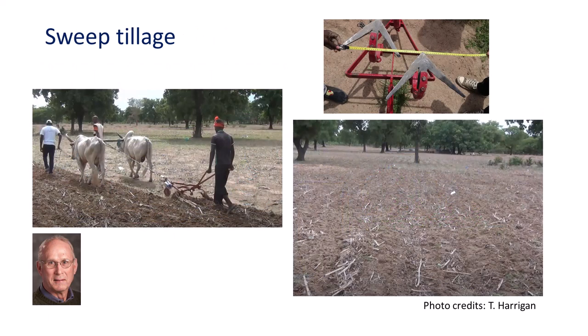Moldboard plowing for seedbed preparation and early weed control is common in Burkina Faso. The problem was that feed was in short supply at the end of the dry season, and animals were in poor physical condition for plowing, which limited their productivity. We worked with local blacksmiths to build low-crown, low-pitched sweeps for full-row root cutting at a shallow depth to improve weed control and ease animal burden.